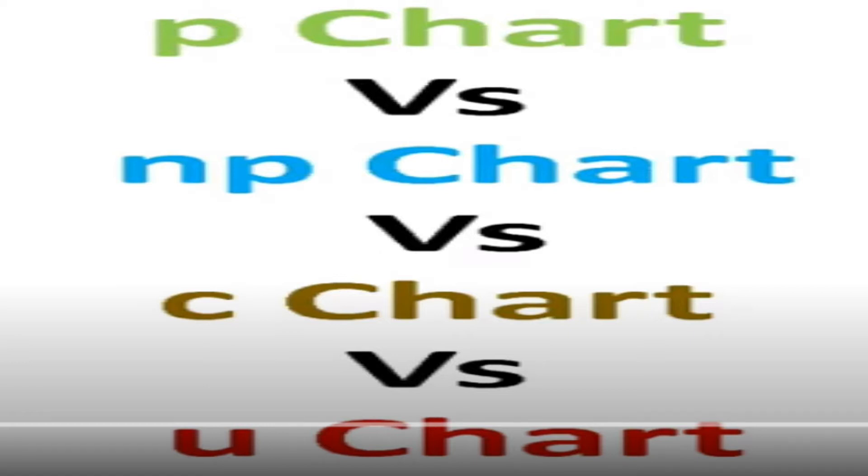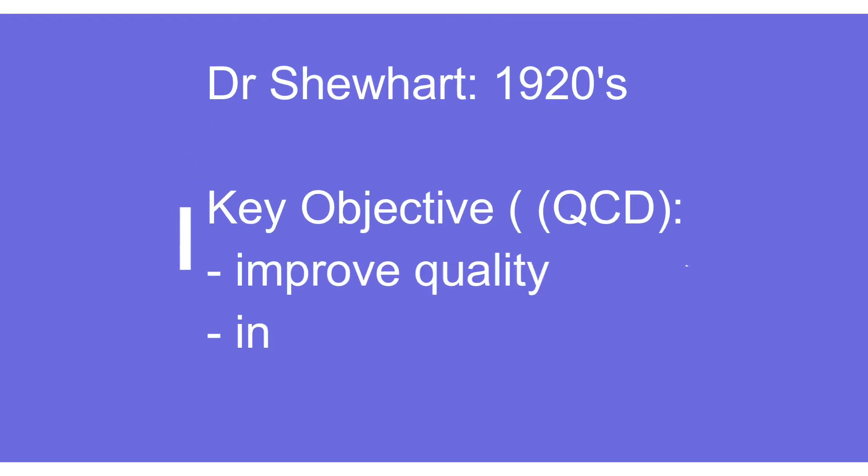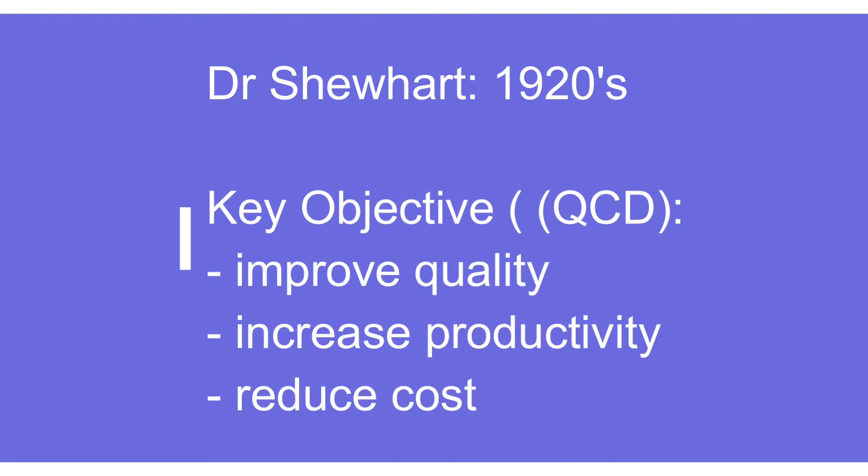Before going further, it is important to understand where it all started. Somewhere in the 1920s, Mr. Walter Shewhart initiated making different types of control charts with respect to variable as well as attribute. The main intent was to improve quality, decrease cost, and improve productivity.